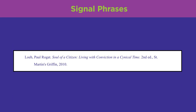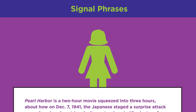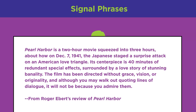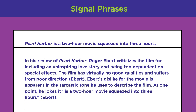Now let's meet Ava, who is writing a research paper about Hollywood's interpretation of World War II. One of her sources is a review of the movie 'Pearl Harbor' by film critic Roger Ebert: 'Pearl Harbor is a two-hour movie squeezed into three hours about how on December 7th, 1941, the Japanese staged a surprise attack on an American love triangle. Its centerpiece is 40 minutes of redundant special effects surrounded by a love story of stunning banality. The film has been directed without grace, vision, or originality.'